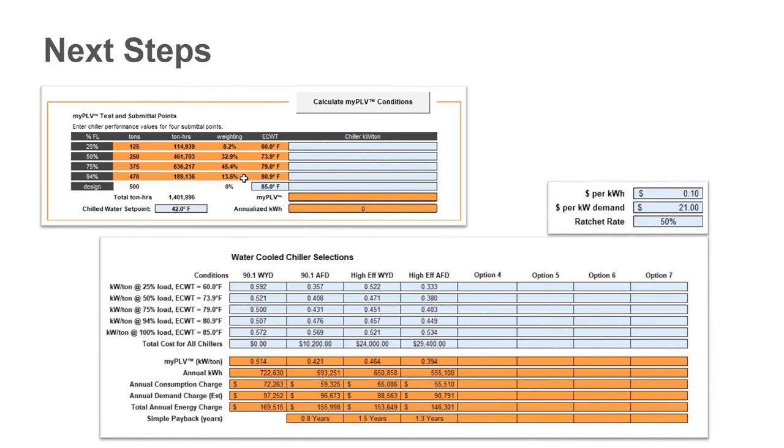On the bottom here, we're showing you what the bid form looks like. This is the other section. What the bid form allows you to do is a side-by-side comparison of either different chillers, different chiller manufacturers, or different chiller options. And that's what I'm showing you at the bottom is the first case is a 90.1 starter machine. And then we're going to look at adding an AFD or going to higher efficiencies and what those paybacks look like. And the paybacks are going to be based on both demand and consumption. So you can see on the right-hand side, we do have a place for you to enter in dollar per KWH, dollar per KW, and then a ratchet rate if you have one.